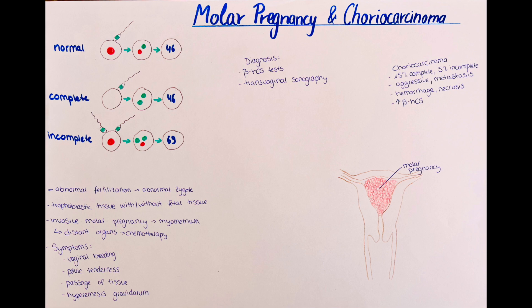The P57 gene, also called the KIPP2 gene, is strongly paternally imprinted and only expressed from the maternal allele. Because in a complete mole there is no maternal genetic information, the P57 gene will not be expressed. We can use a special P57 immunostaining to differentiate between an incomplete and a complete mole.